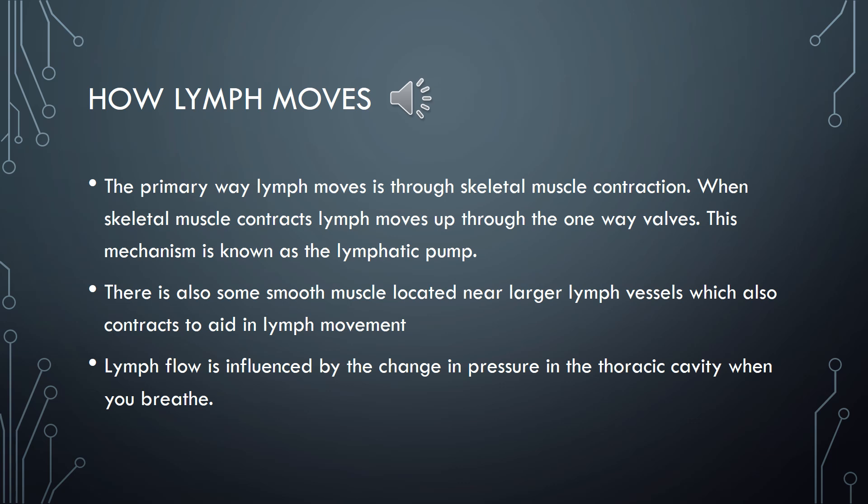This mechanism is known as the lymphatic pump. There is also some smooth muscle located near larger lymph vessels, which also contracts and aids in lymph movement in much the same way. Lymph is also influenced by the change in pressure in the thoracic cavity when we breathe. When we breathe in and breathe out, that pressure is continually changing.